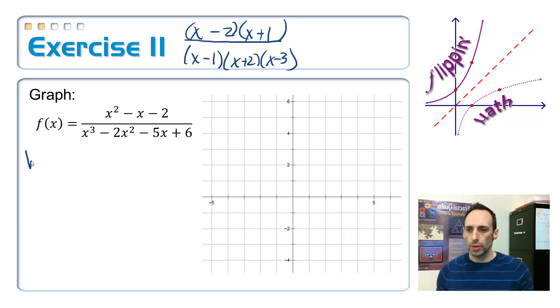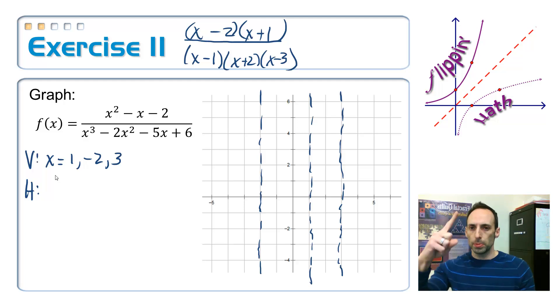Vertical asymptotes. We've got three of these suckers. We've got x is equal to 1, negative 2, and 3. Oh, my goodness. 1, negative 2. I think that's right there. And then positive 3. Oh, those are really close. Okay. And then horizontal. The degree of the bottom is bigger than the top, so that's y equals 0. So, x-axis, got that.